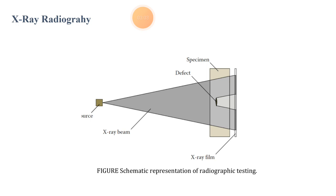In the X-ray radiography diagram, there are representations of this radiographic testing. A specimen is placed and defects are present within it. An X-ray beam is then directed onto the specimen.